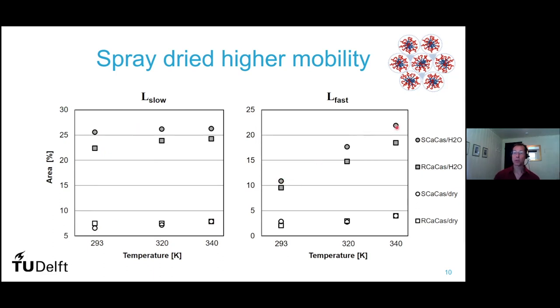The fast movement, there you see also that the spray-dried one is having a higher mobility. So we think that this higher mobility is connected to the possibility to get a good texture, fibrous texture. So I think that this is an important way to look further also into the plant proteins when you try to make these sheared textures.